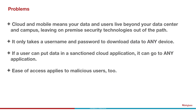To quickly recap: cloud and mobile means your data and your users live beyond your data center and campus, leaving on-premise security technologies out of the path. It only takes a username and a password to download data to any device, managed or unmanaged. If a user can put data into a sanctioned cloud application, that data can potentially go to any cloud application. And finally, that ease of access that cloud brings applies just as much to malicious users as it does to good-intentioned internal users. Those are the four problems that CASBs are trying to solve. Next time we'll address how CASBs attempt to solve those problems and what the strengths and weaknesses of each method are.